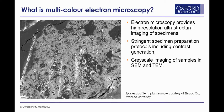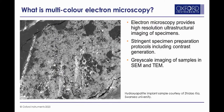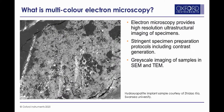Electron microscopy has been used for decades in biological research, primarily because of its ability to provide high-resolution images of specimens. However, this does come with some restraints revolving around sample preparation, often involving fixation and, if not using cryo-electron microscopy, dehydration of the sample. Contrast is often added in the form of heavy metal stains, and for TEM the samples are usually embedded in resin and sectioned, while for SEM they would be dried and coated.